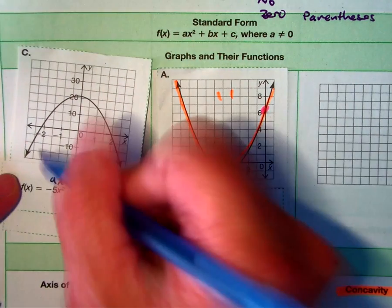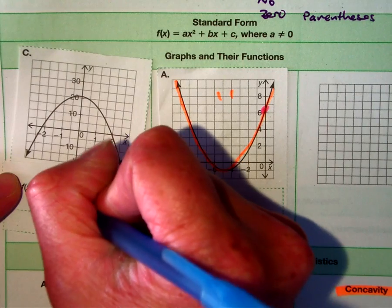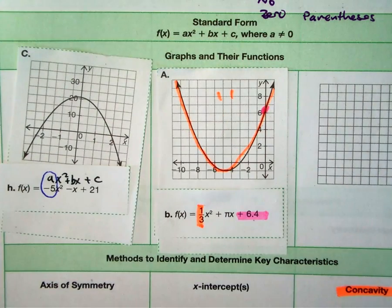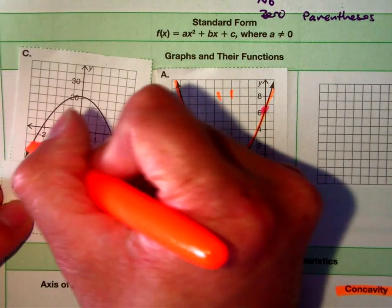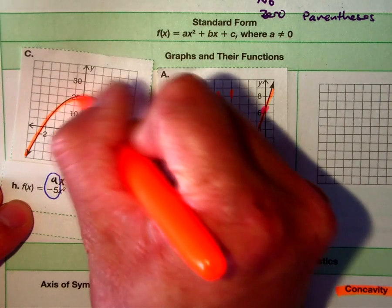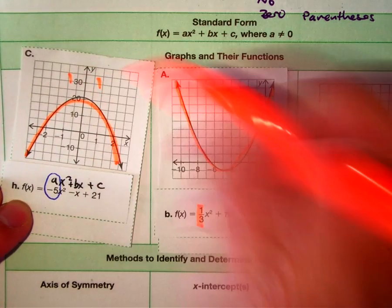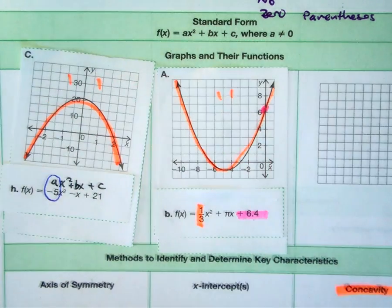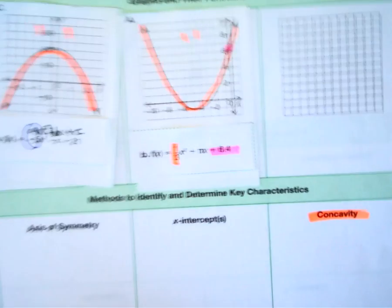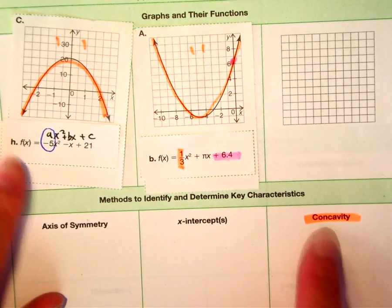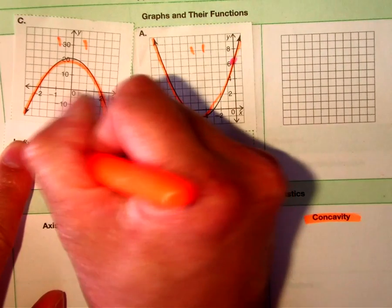Your A value is a negative number, which means it opens down. Sad people are sometimes negative, right? That's called your concavity.